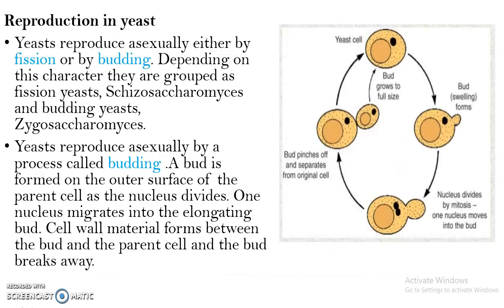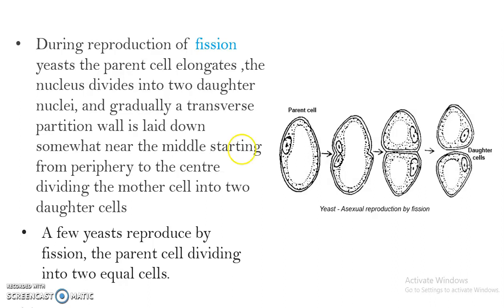Next we can see reproduction in yeast. Yeast can reproduce asexually and sexually. The asexual mode of reproduction is by budding and fission. Based on this, we can see two groups of yeast: fission yeast — Schizosaccharomyces — and budding yeast — Saccharomyces. In budding, the parent cell forms a bud as a swelling; this swelling gradually enlarges, and the nucleus of the parent cell divides by mitosis; one nucleus migrates to the bud, and after achieving growth the bud detaches from the parent cell to form a new yeast cell. In fission, the parent cell gets slightly enlarged or elongated; the nucleus undergoes division, followed by division of the protoplasm to form two equal daughter cells.